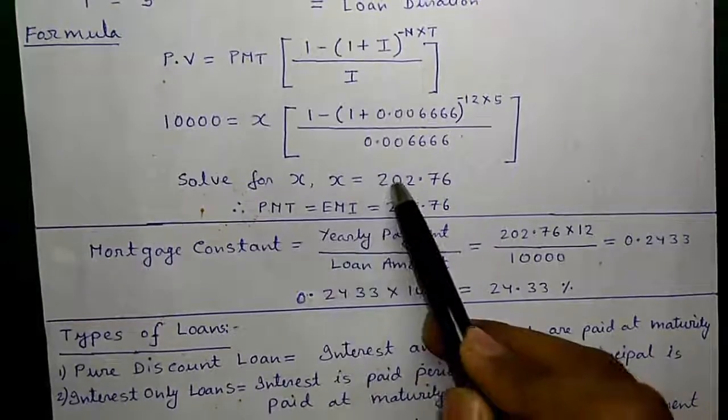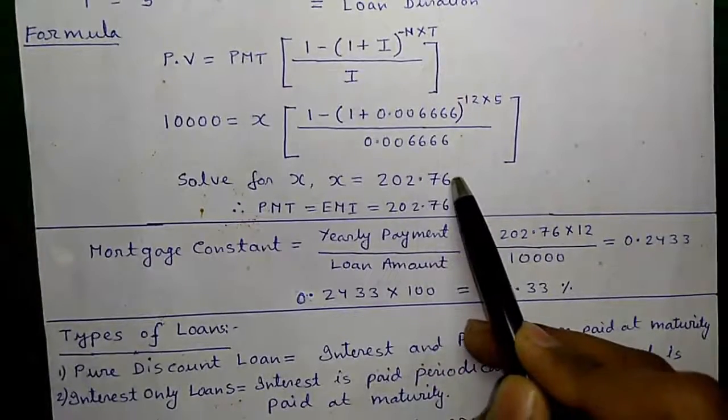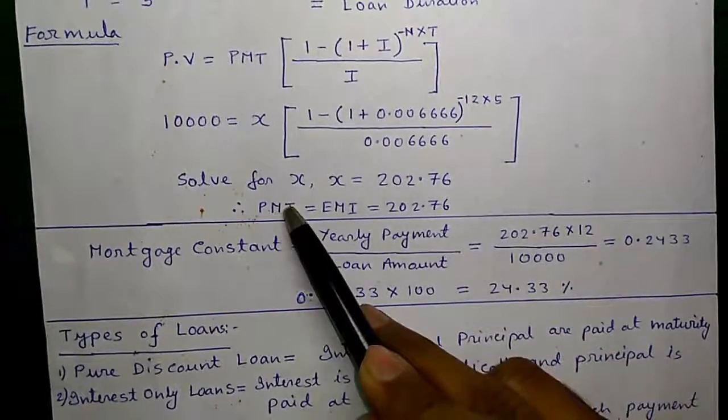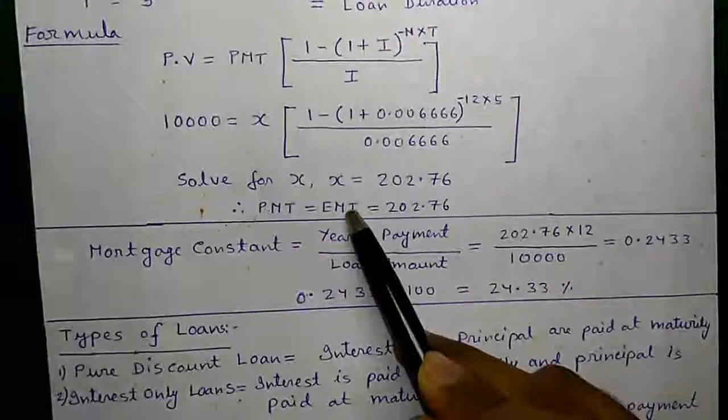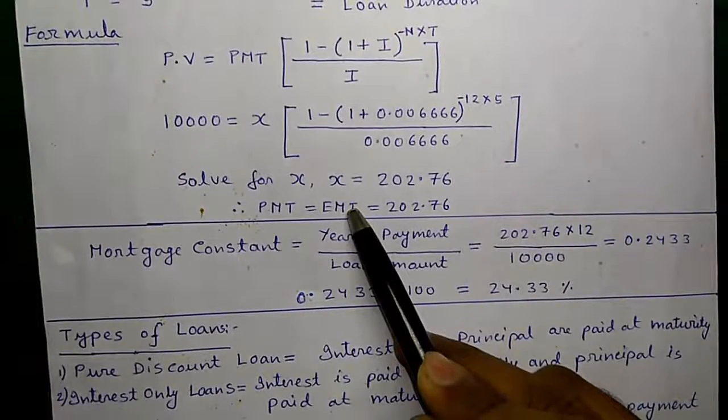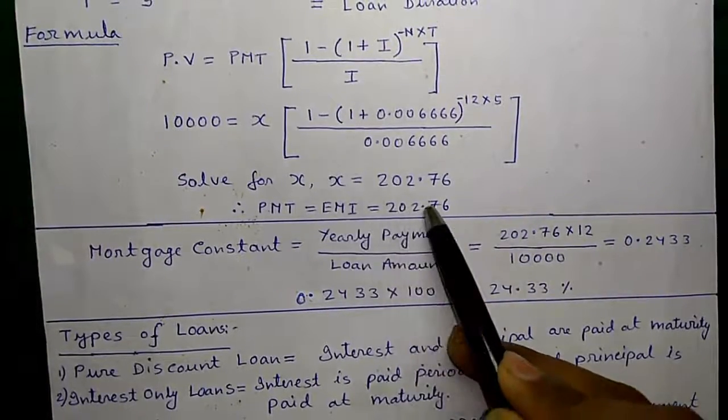Solving for X, you will get 202.76. So your monthly payment amount or the EMI, also called equated monthly installment, will be 202.76.